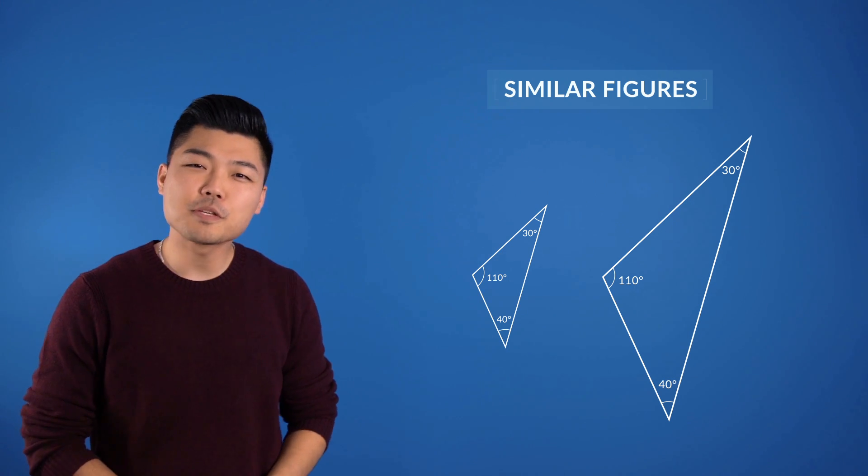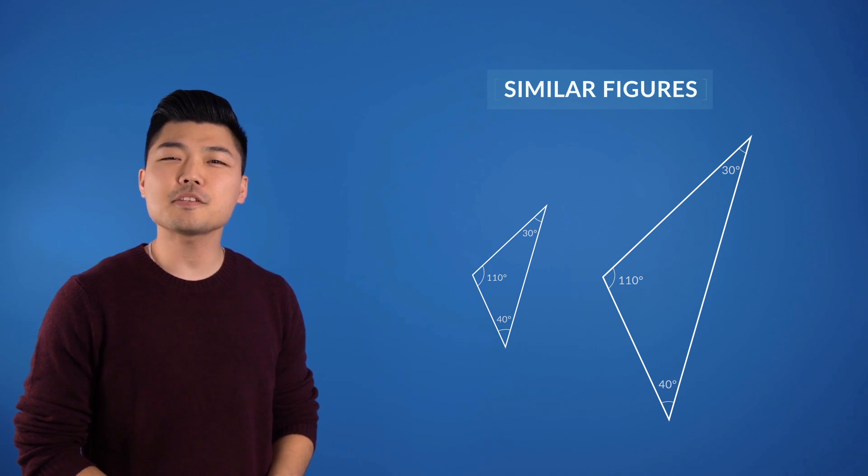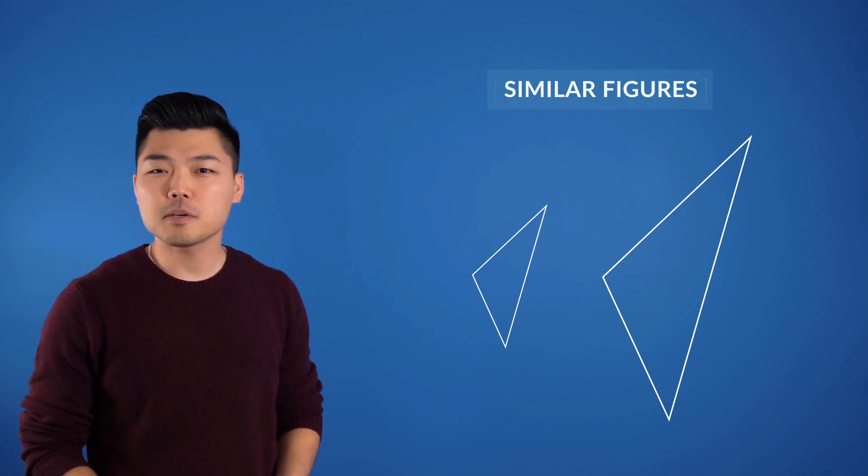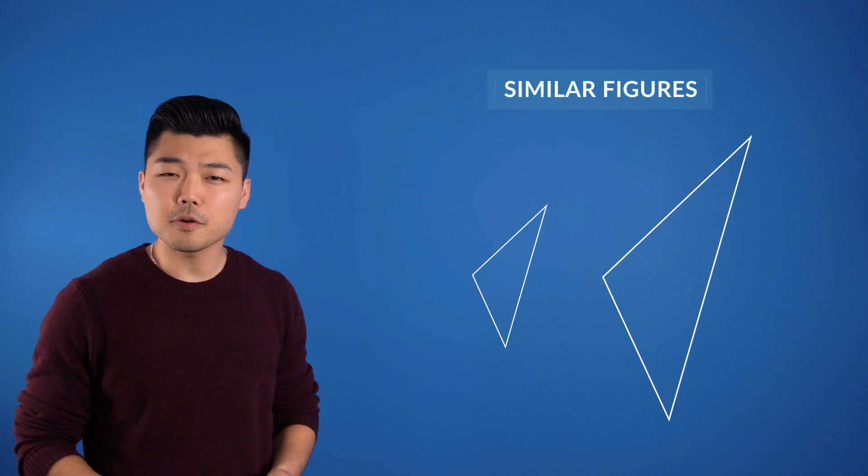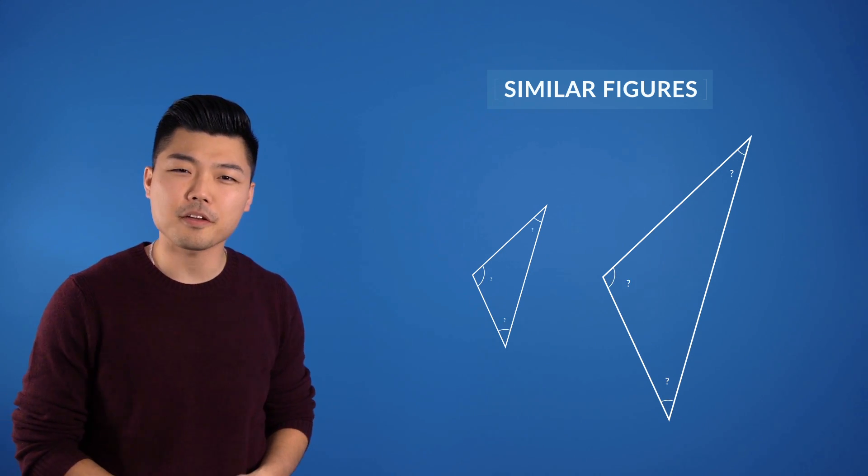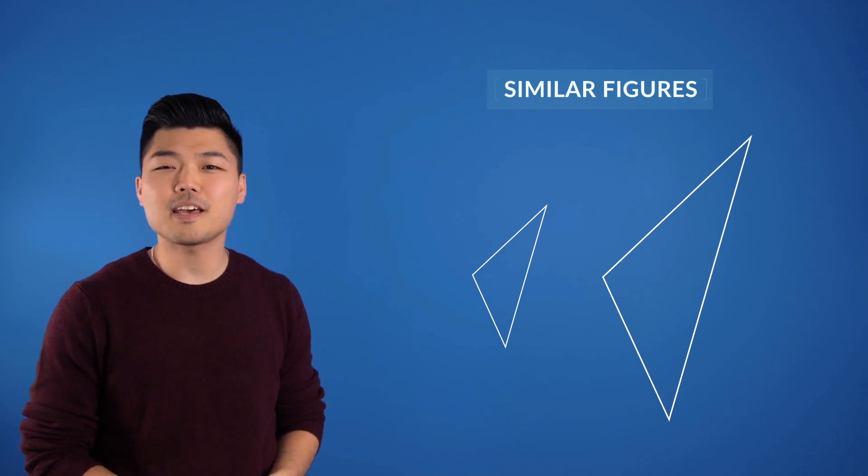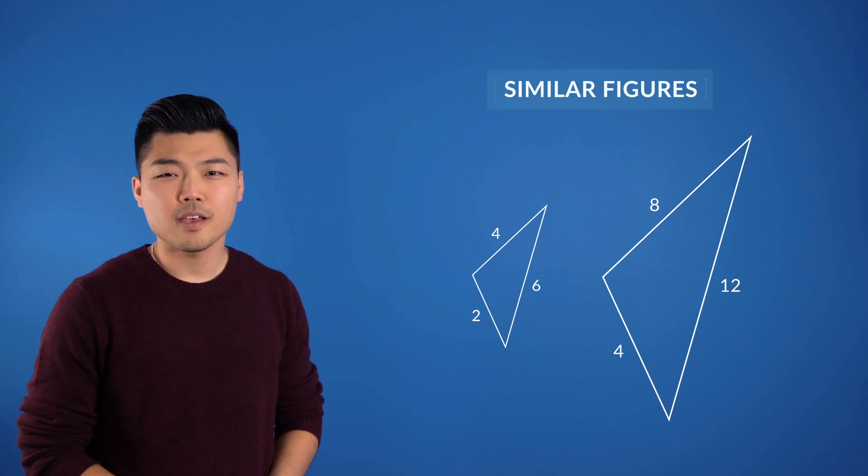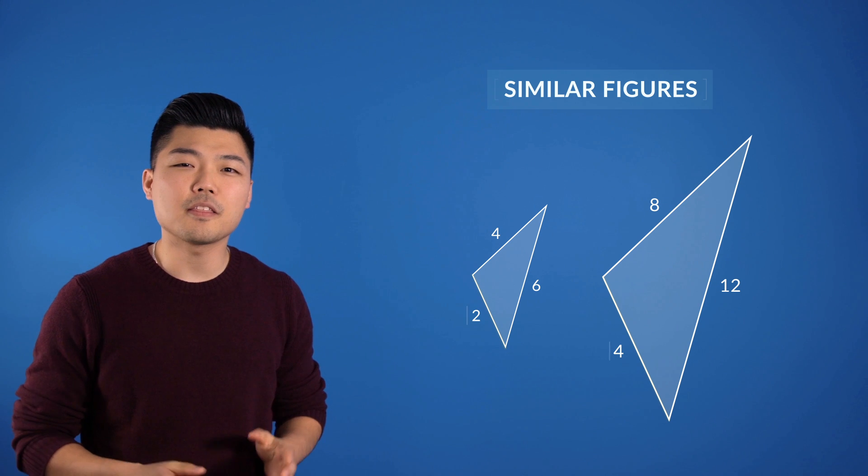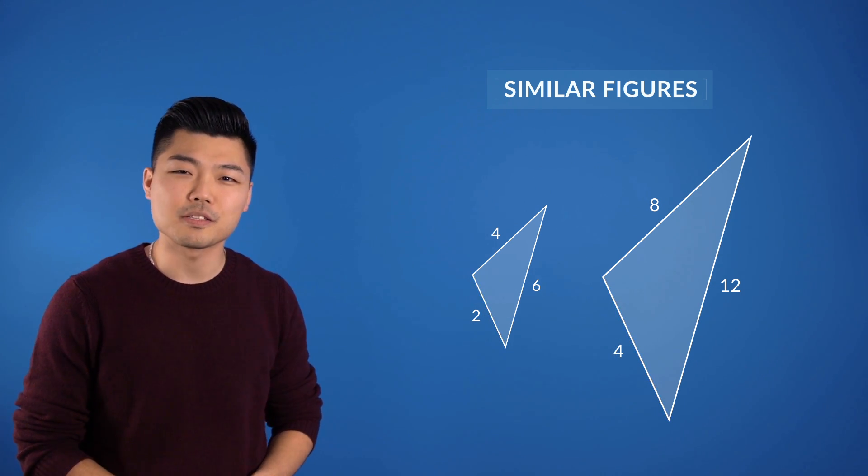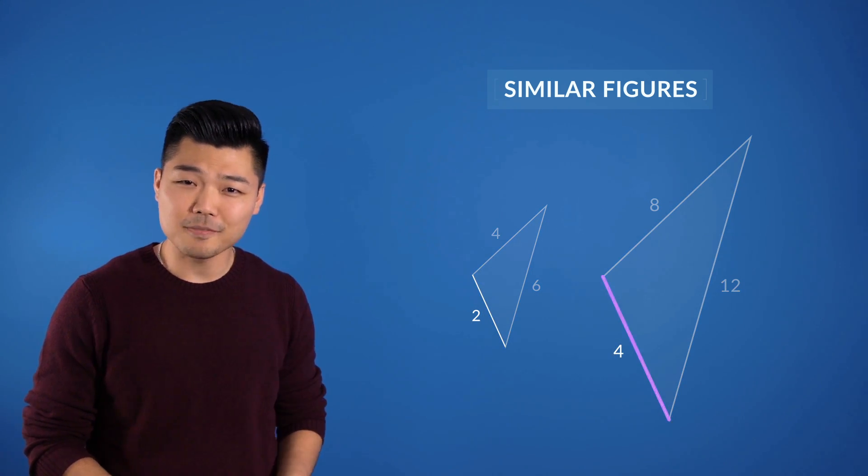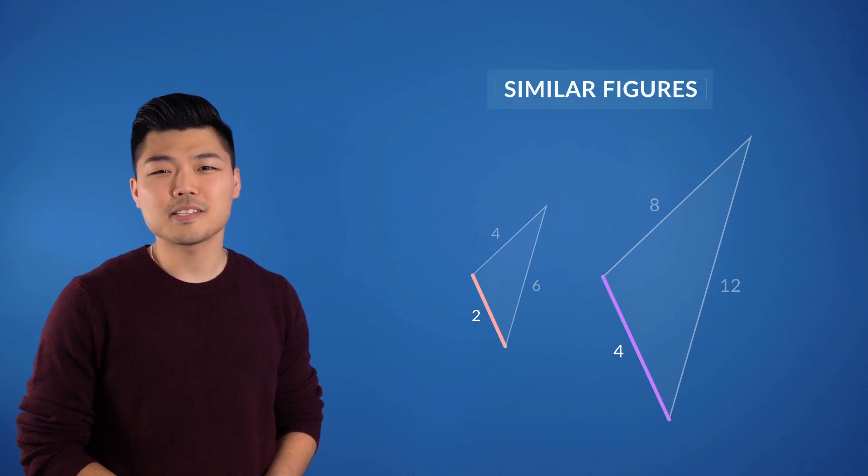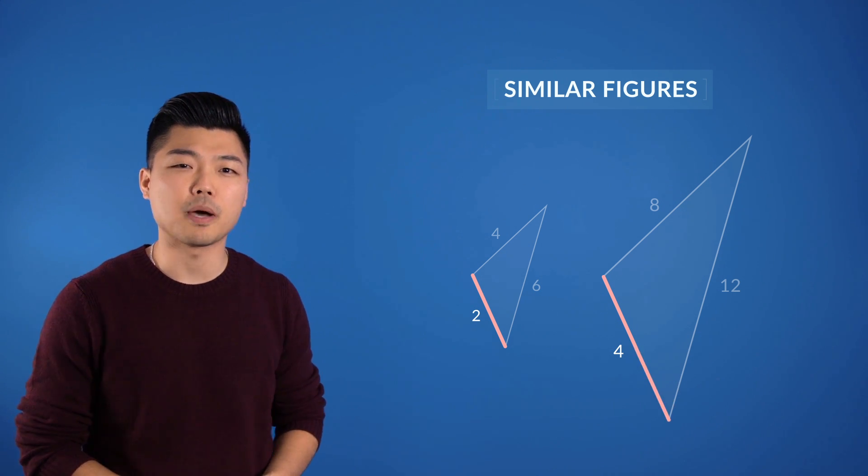Finding the similarity between two figures isn't always just about looking straight at the angles either. Sometimes we might be given two triangles that don't have any information about their angles, but instead information on only the side lengths. In this case, if we look at these two corresponding sides, we see that this side is double the length of this side. And since it's bigger by exactly two times the amount,